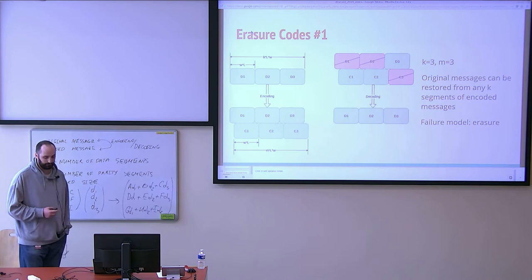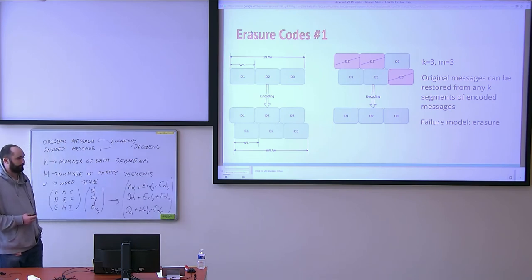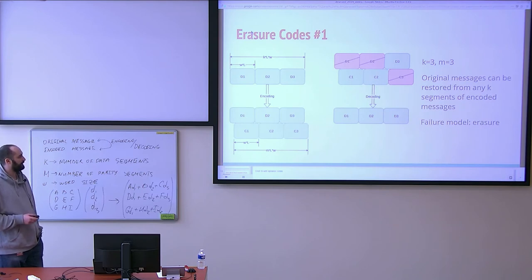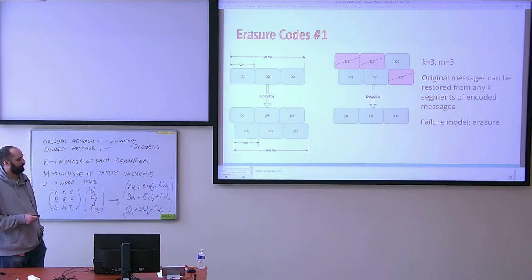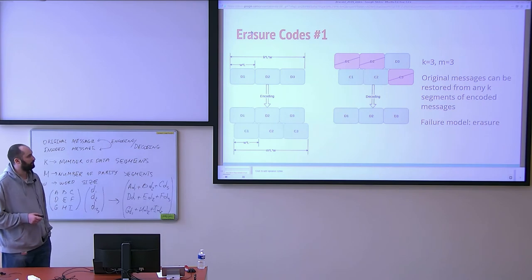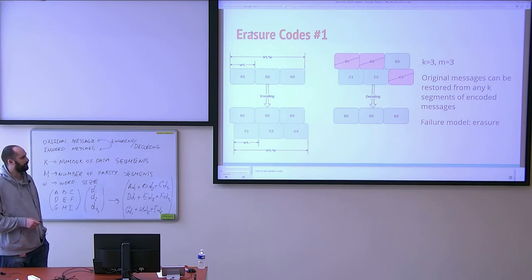The concept behind erasure codes is simple. The original data is separated into segments and encoded. After the data is encoded, you get a number of additional segments that contain special checksums. Those segments are independent from each other and each segment can be calculated independently from the original data. The math behind erasure codes allows you to lose a number of segments of an encoded message and still restore the original data without any problem.